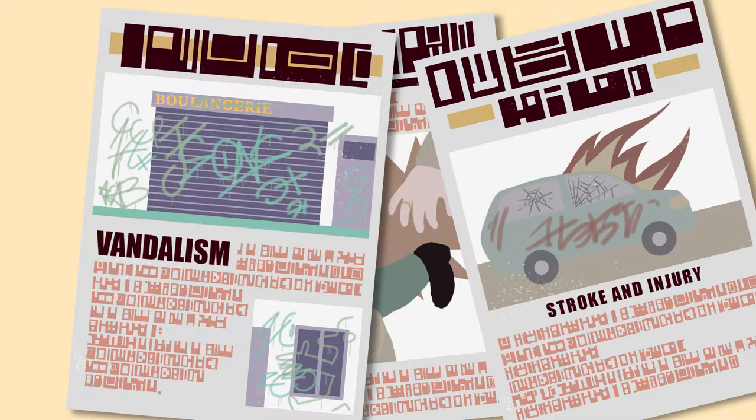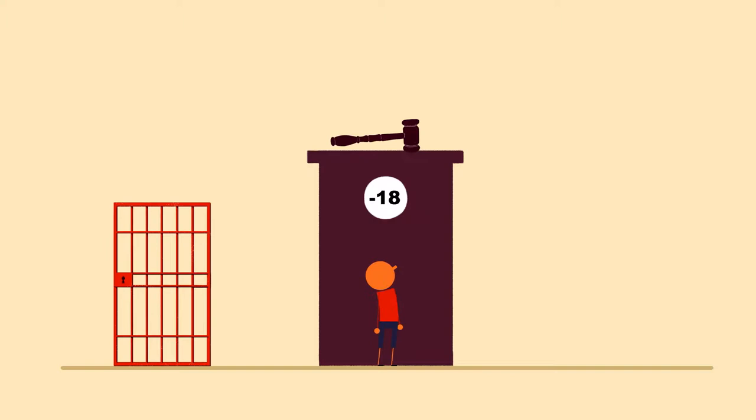Our society is facing a large number of offenses committed by both adults and minors. When the perpetrator is a minor, the law should not seek to punish them, but help them change in order to get their life back on track.